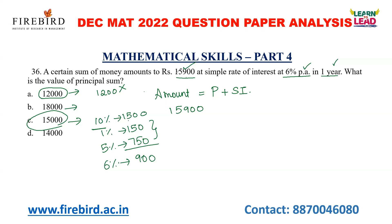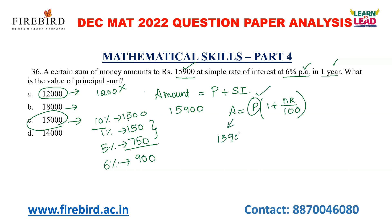For these kinds of questions, it is better if you go with the options. You can also solve using the formula: Amount = P × (1 + NR/100). If you substitute all the values into this equation, you will also get 15,000 as the answer for P. You have to substitute the amount value as 15,900.